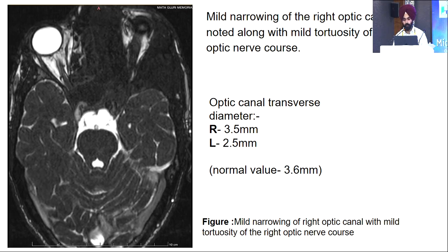There was also mild narrowing of the right optic canal along with mild tortuosity of the optic nerve. The optic canal transverse diameters were: 3.5 mm on the right side and 2.5 mm on the left side. The normal value is 3.6 mm.